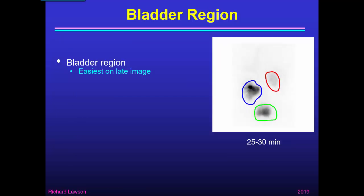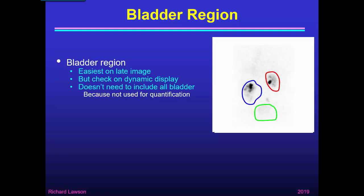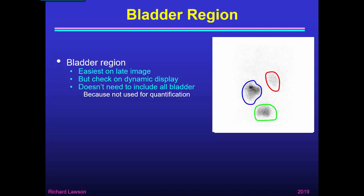The bladder region is easiest to draw on a late image, when the bladder will be at its fullest. Again, it's a good idea to check it on a dynamic display to make sure it stays within its region. However, you don't need to include all of the bladder, because it's only used for generating a representative curve, not for quantification. So if part of the bladder is outside the gamma camera field of view, it doesn't matter if you miss a bit.